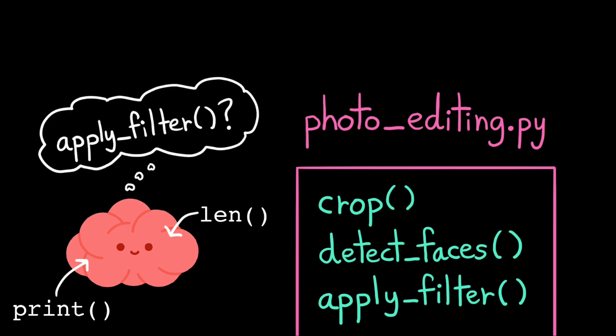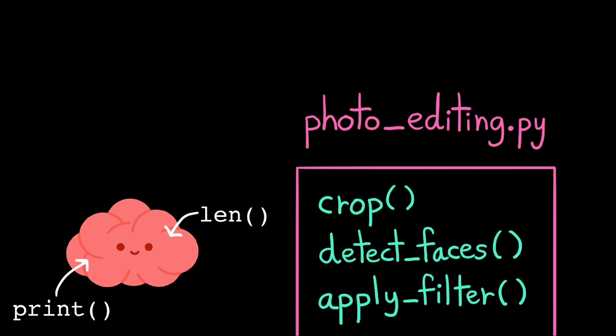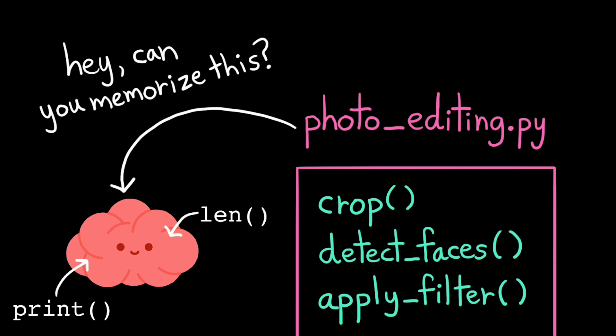That's because the computer has limited memory. It doesn't have space to pre-memorize the thousands of modules that are out there in the rare event that we might use a specific one. Instead, it waits for us to tell it that we need a specific module. Only then does it bother to go read that file and memorize all those functions for us.